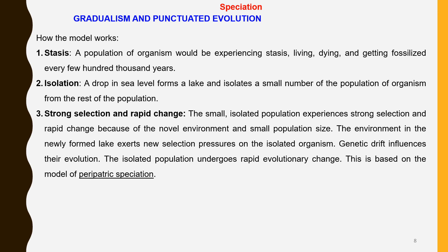Second, isolation. A small drop in sea level would form lakes and isolate a peripheral small number of organisms in the population from the rest. Next, due to genetic drift, a strong selection and a rapid change occurs in this small isolated population. Genetic drift influences their evolution.